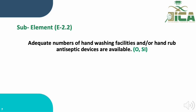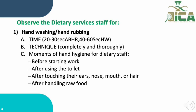Sub-element E.2.2 states that adequate numbers of hand-washing facilities or hand-rub antiseptic devices are available. This sub-element is evaluated through observation and staff interview. We need to observe kitchen staff performing hand-rubbing (20–30 seconds) or hand-washing (40–60 seconds), including the sequence and technique. The moments of hand hygiene include before starting work, after using the toilet, after touching ears, nose, mouth, or hair, after handling raw food, and if visibly soiled.